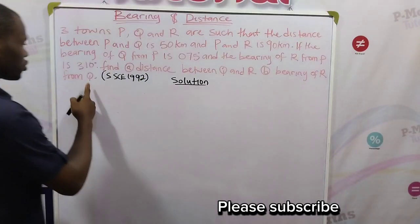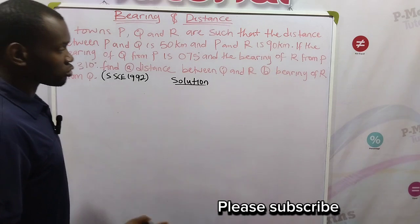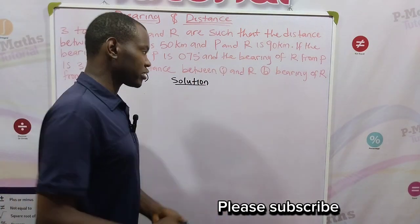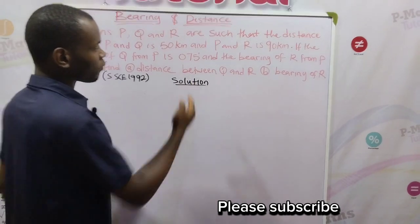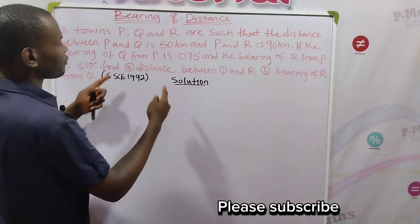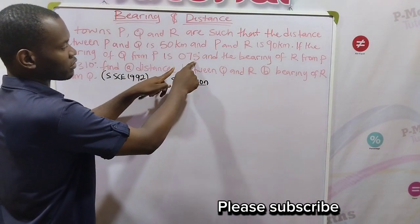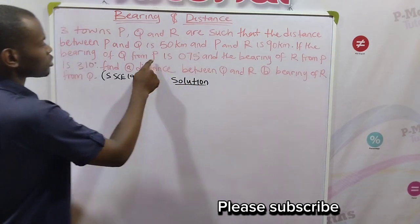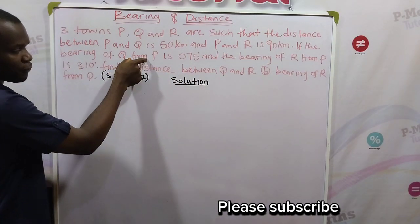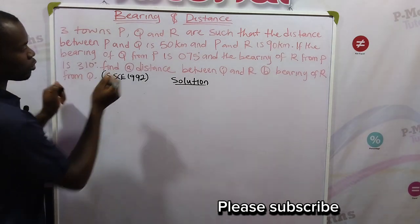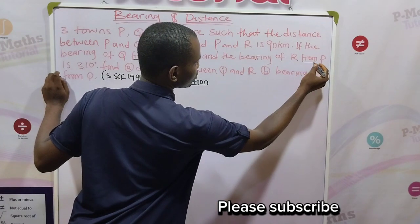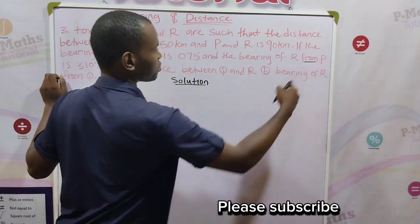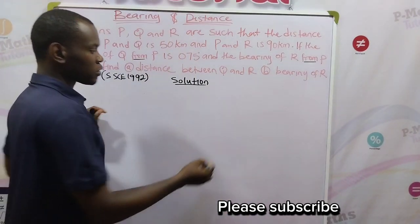So the first thing we want to do is to sketch the diagram. The movement will start from the north pole of P since the first angle we have is 75 degrees. So Q is a distance from P. Take note of the word from P, as well as R from P.